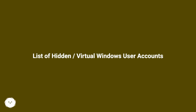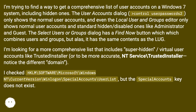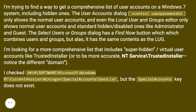List of hidden or virtual Windows user accounts. I'm trying to find a way to get a comprehensive list of user accounts on a Windows 7 system, including hidden ones. The user accounts dialog (control userpasswords2) only shows normal user accounts, and even the Local Users and Groups editor only shows normal user accounts and standard hidden or disabled ones like Administrator and Guest.